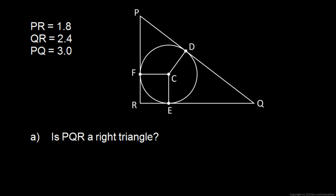Okay, here's an interesting problem that involves a lot of geometry concepts. We're given a triangle here, PQR, and some lengths of the sides. PR is 1.8, QR is 2.4, and PQ is 3.0.